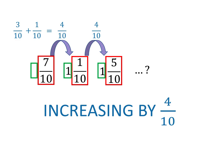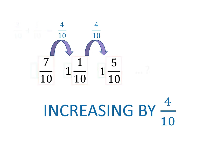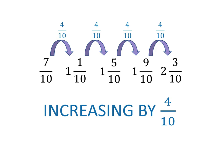Now, we can continue the pattern. 1 and 5 tenths plus 4 tenths is 1 and 9 tenths. And 1 and 9 tenths plus 4 tenths is going to increase the whole number part, giving 2 and 3 tenths.